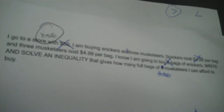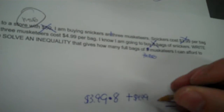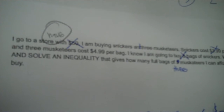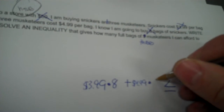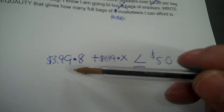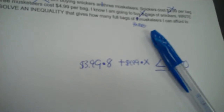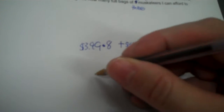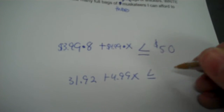Plus, you're also buying Three Musketeers at $4.99. We're buying more than one of them. How many times am I going to buy the $4.99? I really don't know that — that's what I'm solving for. So I'll use X. Now I want to simplify this side. I can multiply 3.99 times 8, and that product is $31.92. So simplify it: 31.92 plus 4.99X less than or equal to 50.